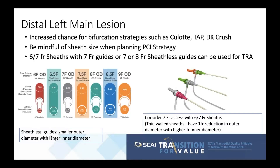Moving on to distal left main lesions — be mindful of sheath size when planning the PCI strategy. Distal left main lesions are a different challenge, with increased likelihood of bifurcation strategies such as culotte, TAP, or DK crush. You can use 6-7 French sheaths with 7 French guides, or 7-8 French sheath-less guides via transradial access. The 6-7 French sheaths have an outer diameter one French smaller than their inner diameter, so the arteriotomy is a 6 French size but accommodates a 7 French guide.